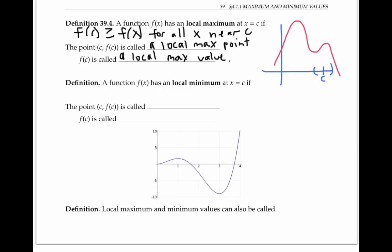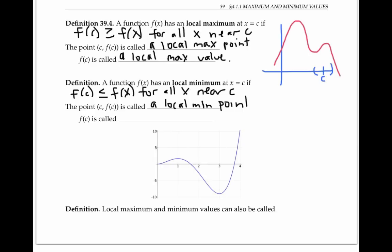Similarly, a function f of x has a local minimum at x equals c, if f of c is less than or equal to f of x for all x near c. The point (c, f(c)) is called a local minimum point, and the y value f of c is called a local minimum value. A function might have many local minimum values.